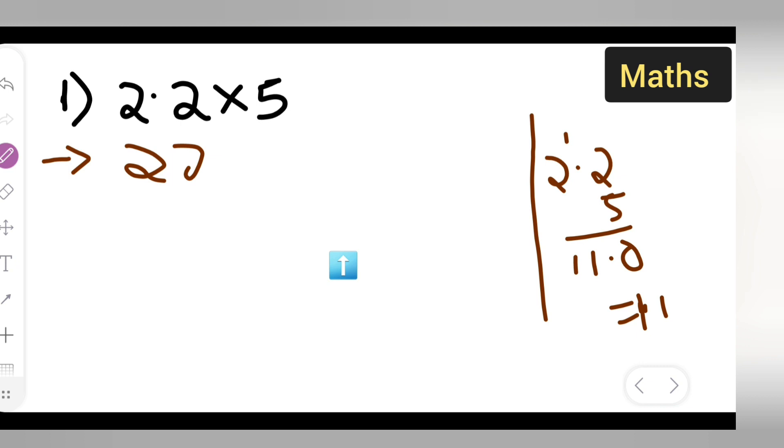Because there is only one decimal place, divide by 10. Then multiply 22 over 10 by 5. You can cancel: 5 ones are 5, 5 twos are 10.